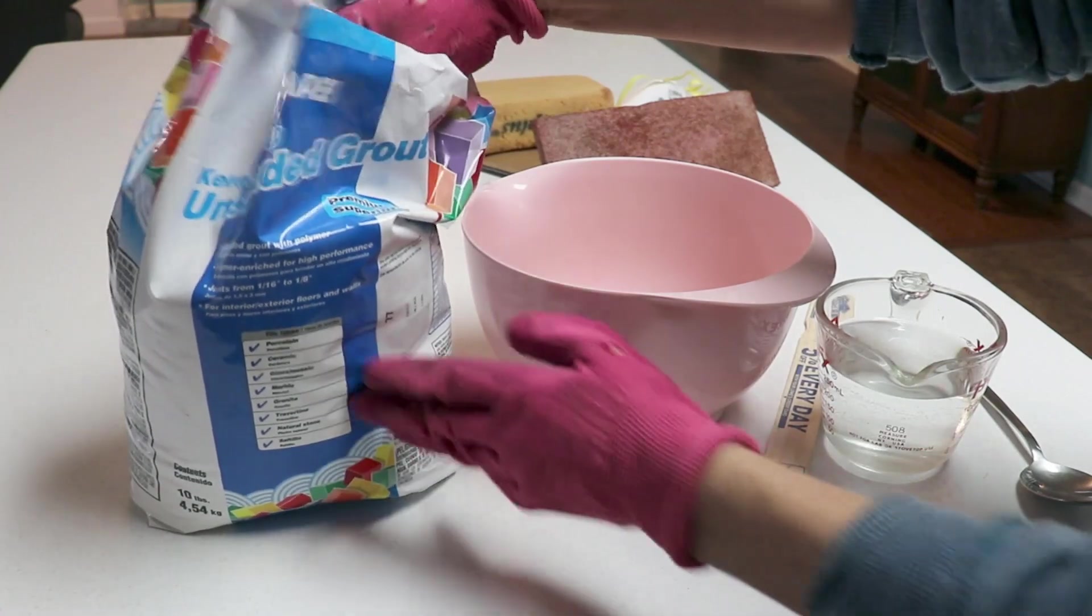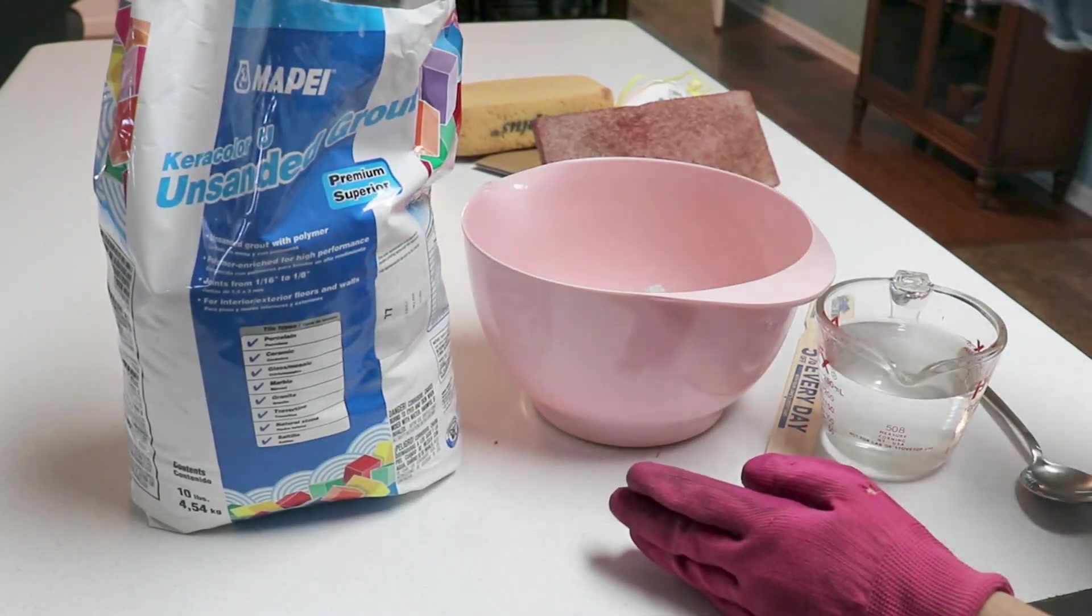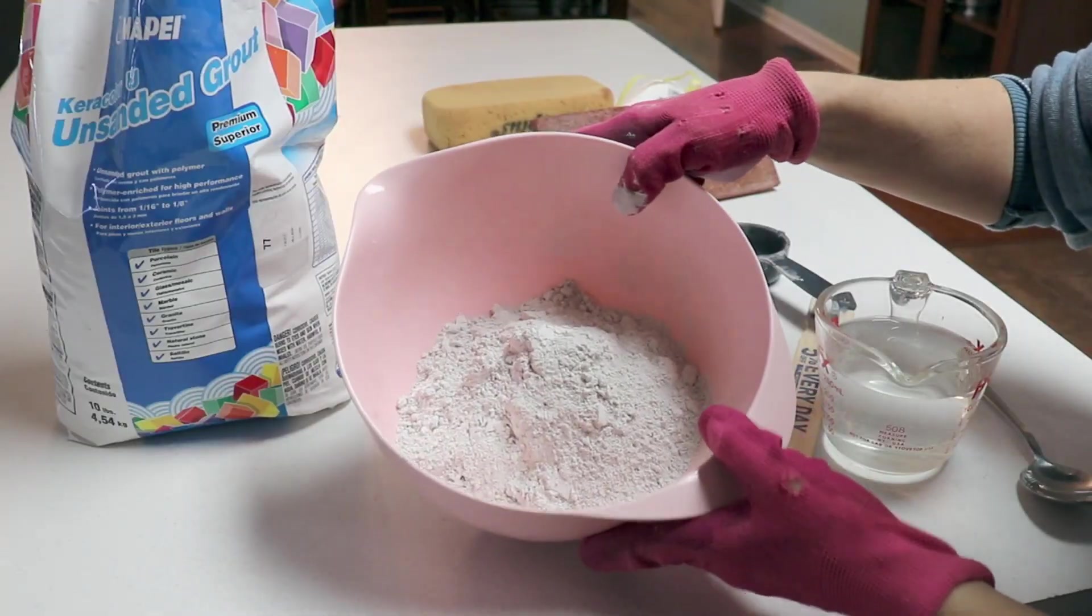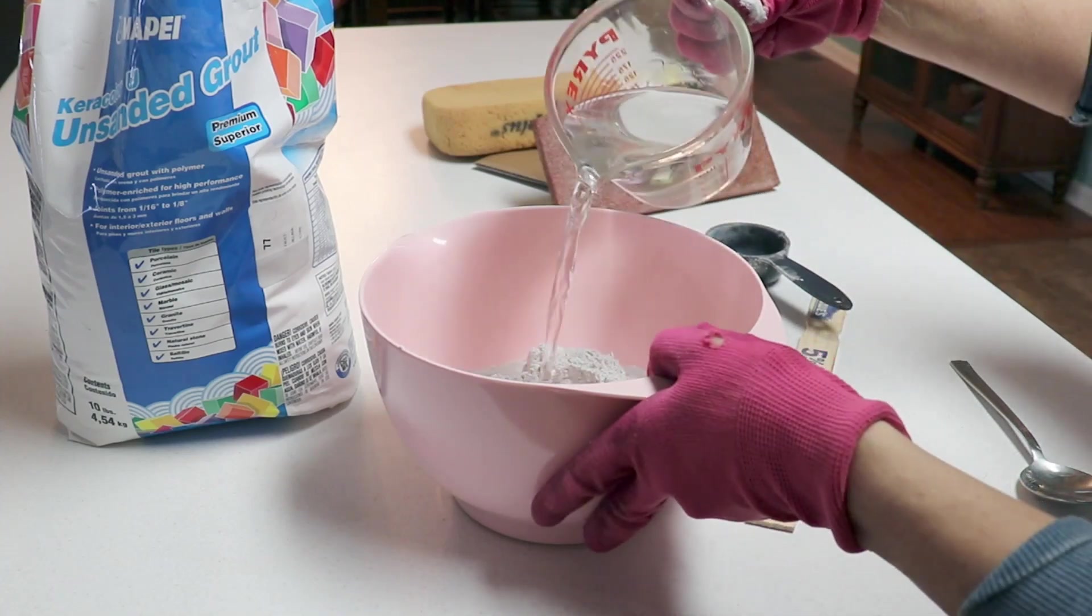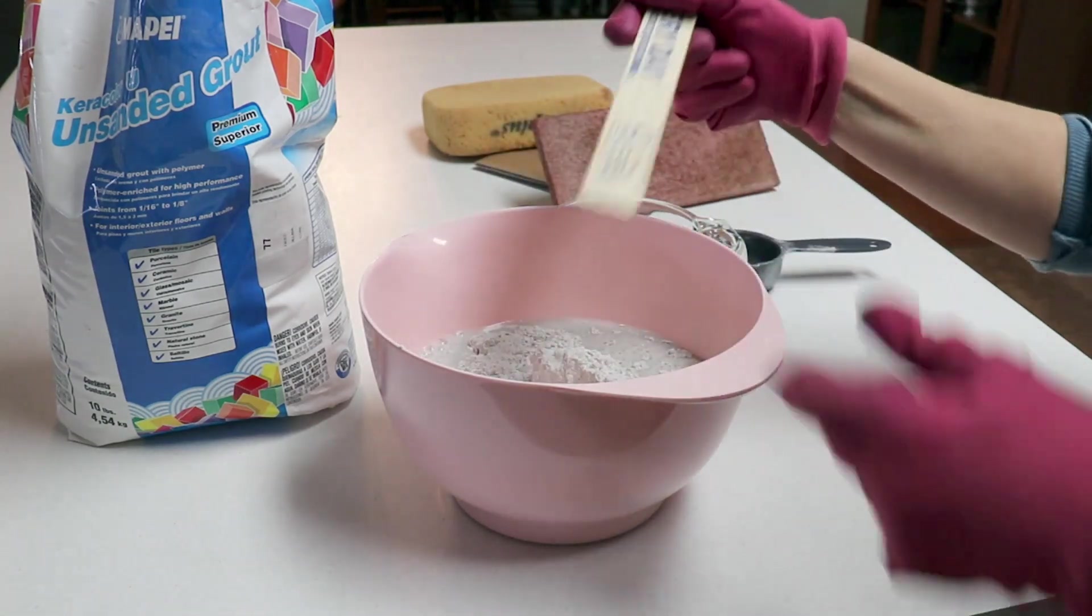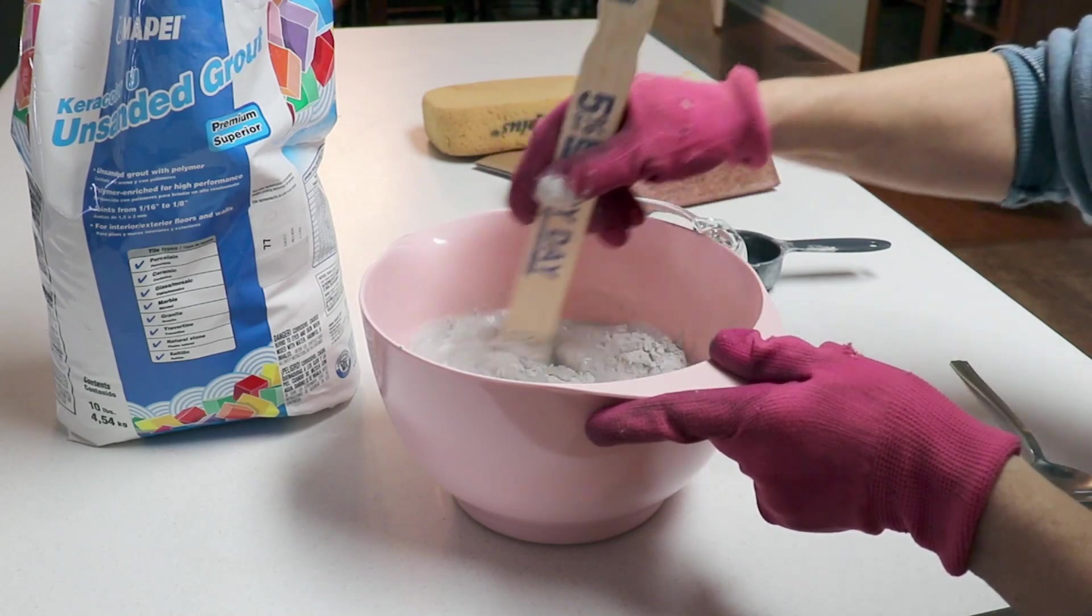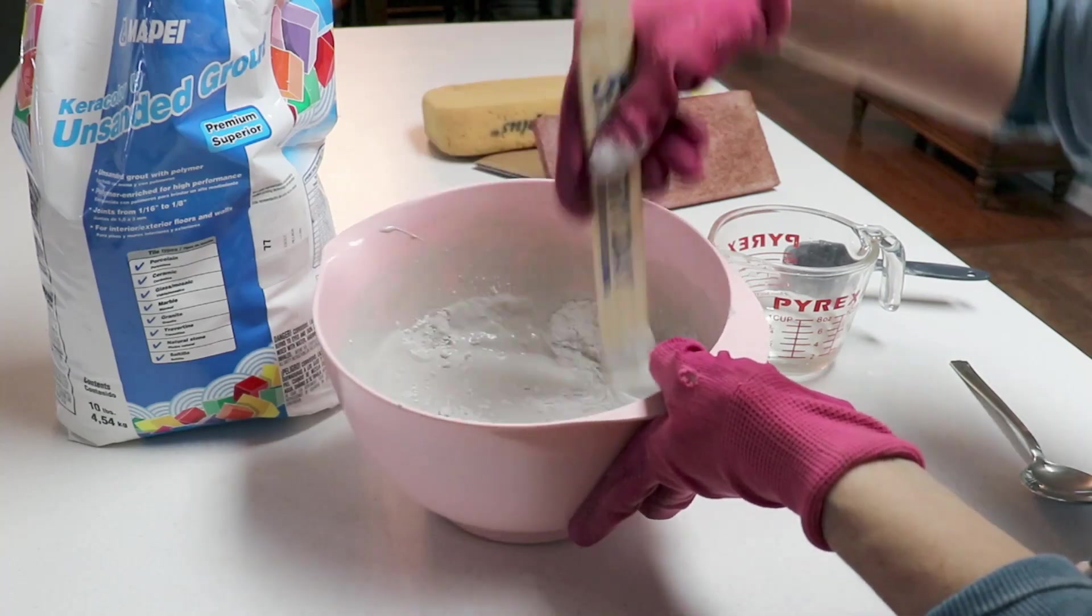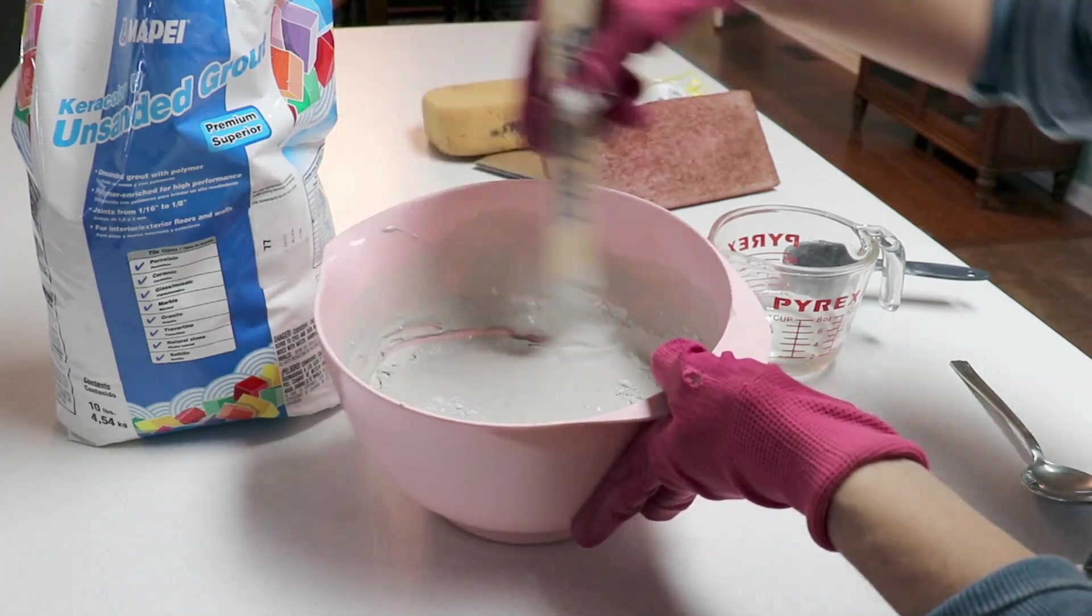Now it's time for the messy part of the project, grouting. Because I have some glass tiles in my mosaic I'm using an unsanded grout. Sanded grout can scratch glass. There's no exact rule for mixing it, you simply add water and stir until it's about the consistency of toothpaste or a tiny bit thinner. Make sure that you mix your grout thoroughly. You don't want it to have big chunks of dust inside it.